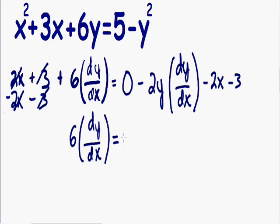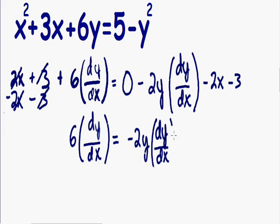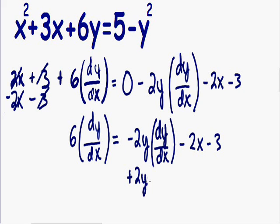On the right hand side, we have 0 (which we don't need to write), negative 2y dy/dx, negative 2x, and negative 3. Now that all the non-dy/dx terms are on the right, I want to bring the dy/dx terms to the left hand side. So I'm going to add 2y dy/dx to both sides of the equation.